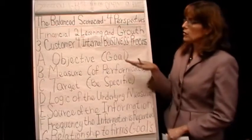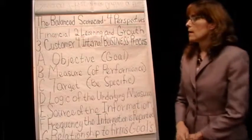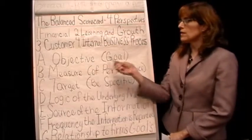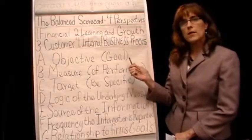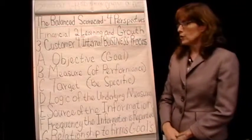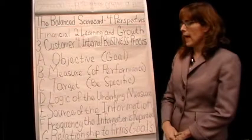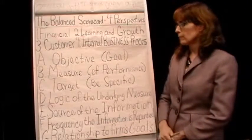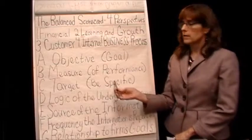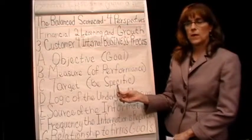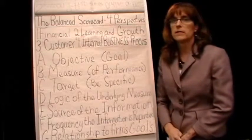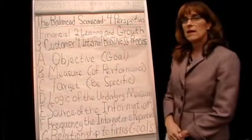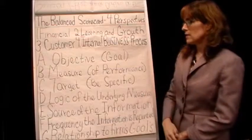There are actually seven parts for each perspective. Once you've identified what you're going to do with the perspective, the first is just the objective, which is the goal — what am I trying to accomplish here? Once you've determined that, you're going to look at how you're going to measure that — this is going to be a measure of the performance. The target that you come up with needs to be very specific, so it kind of quantifies whatever your measure is. I do have a specific example that I'll be going over in the student example in my next segment.